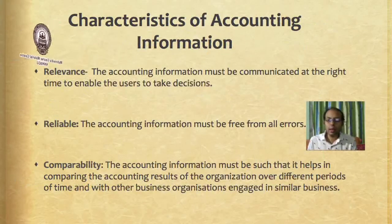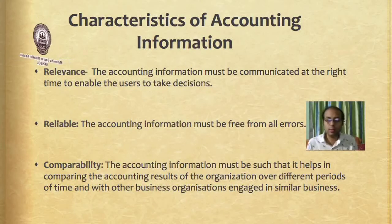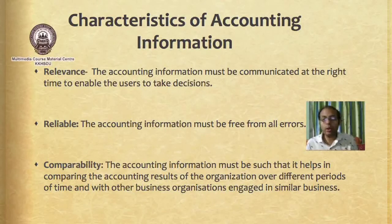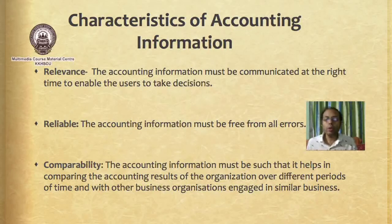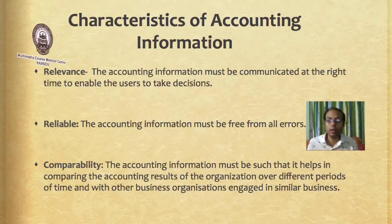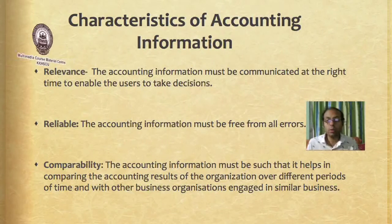As the users are different, the accounting information must possess certain characteristics. Possessing these characteristics will help all users to use the accounting information as per their needs. Number one is relevance: the accounting information must be relevant and must be communicated at the right time so that users can take decisions. For example, the board of directors must know the amount of profit generated in a financial year to declare dividend at the right time, so information is relevant only if it is generated at the right time.